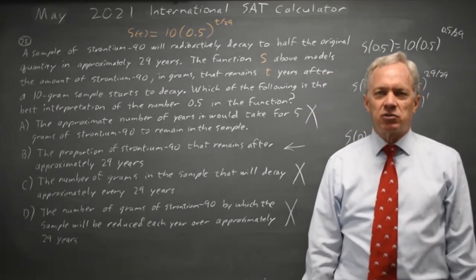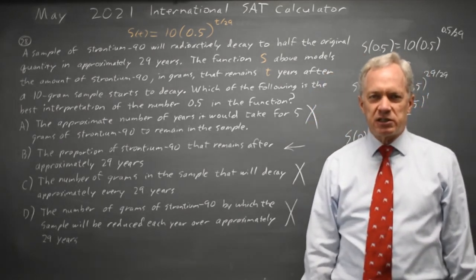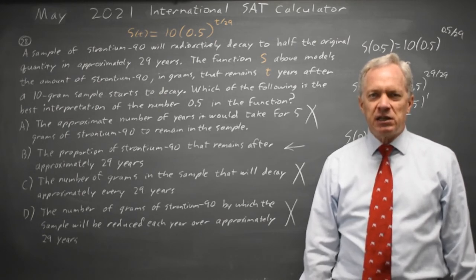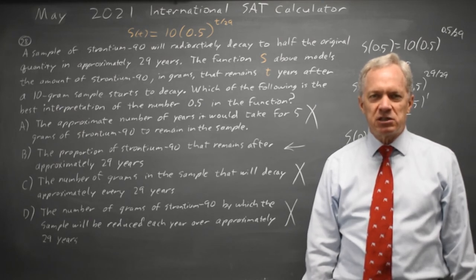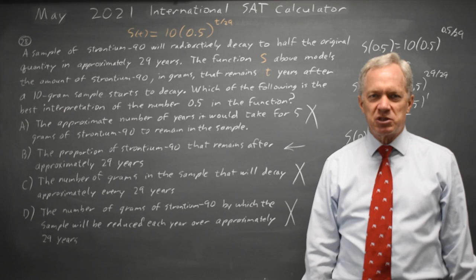Choice B is the only description that matches the numbers I tried. College Board often asks about exponential decay, and it's important to understand this from a variety of perspectives. Frequently, it helps to just substitute in numbers and see which explanation matches.